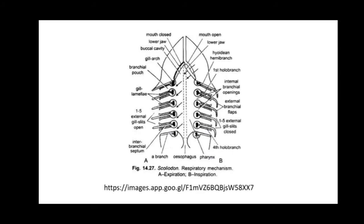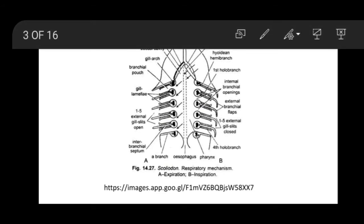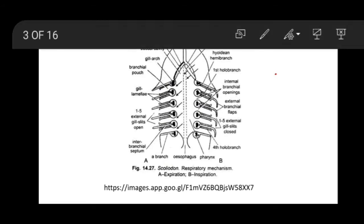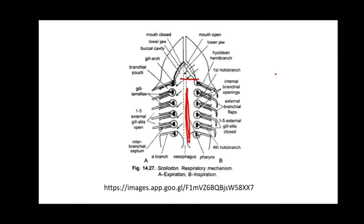The respiratory system consists of the mouth — you can see here the mouth, lower jaw, and the buccal cavity. This portion is the mouth, then the buccal cavity, and this portion is known as the pharynx. So the respiratory system consists of the mouth, buccal cavity, and the pharynx.